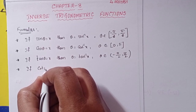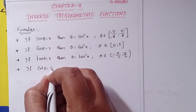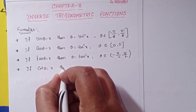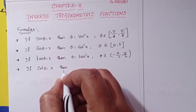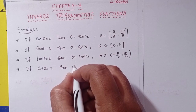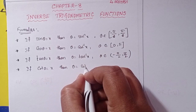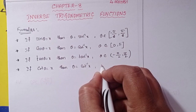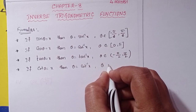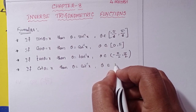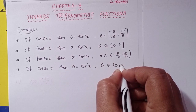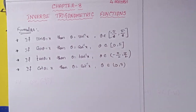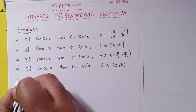If cot θ = x, then θ = cot⁻¹(x), where θ belongs to the open interval (0, π).